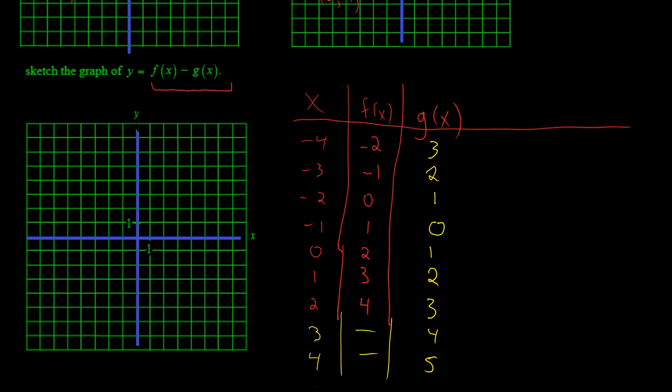So I didn't really need to put in those last two values because I cannot subtract 4 from nothing. So my resulting graph is really only going to be defined from negative 4 to positive 2, which is your most limiting domain.